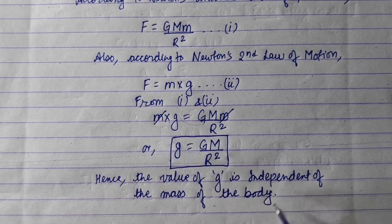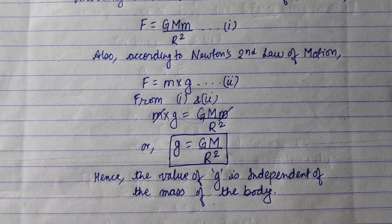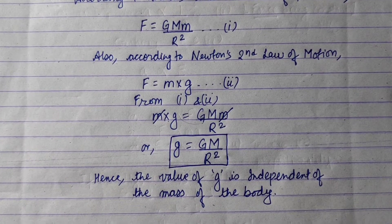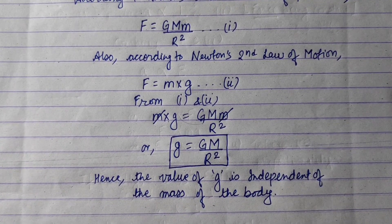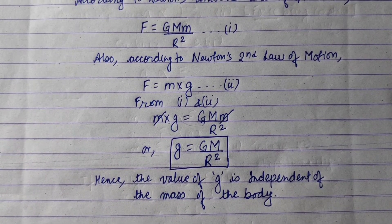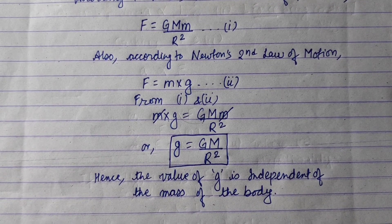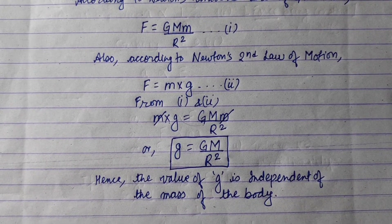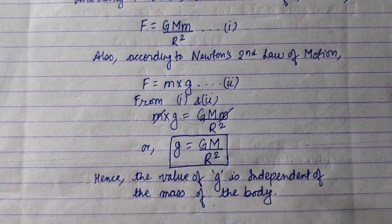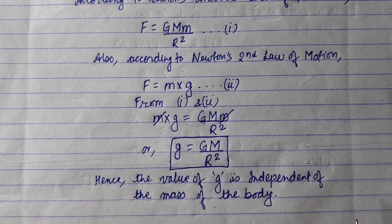Hence the value of acceleration due to gravity is independent of the mass of the falling body. So the value of g is independent of the mass of the body.